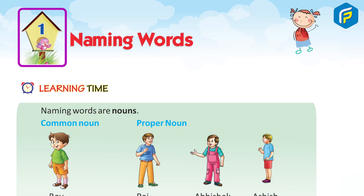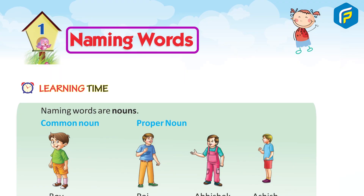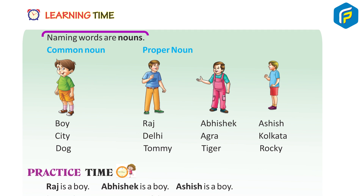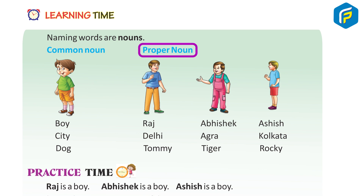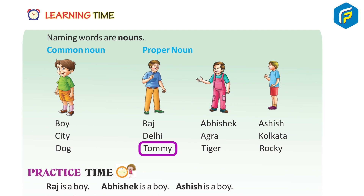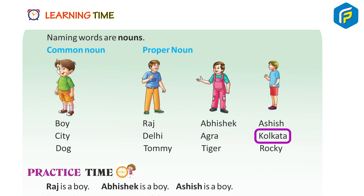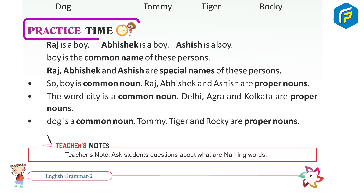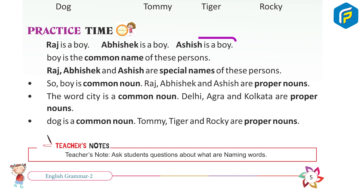Chapter 1: Naming Words. Learning Time. Naming Words, Noun, Common Noun, Proper Noun. Examples: Boy, City, Dog are common nouns. Raj, Delhi, Tommy are proper nouns. Abhishek, Agra, Tiger, Ashish, Kolkata, Rocky are also examples. Practice Time: Raj is a boy, Abhishek is a boy, Ashish is a boy.